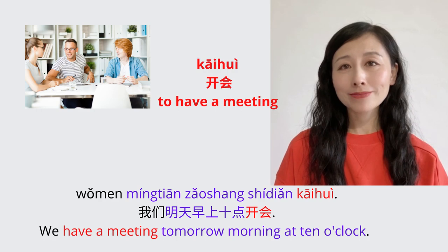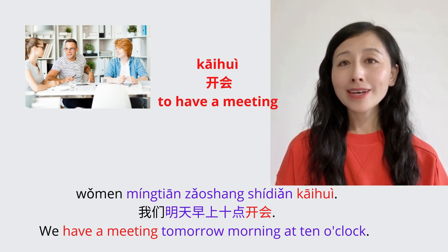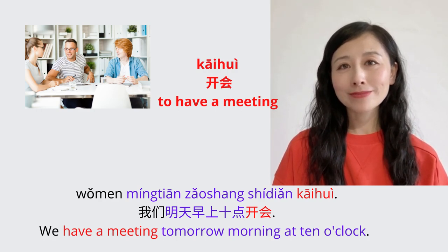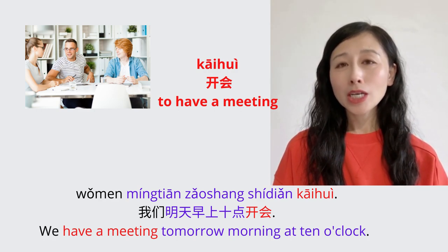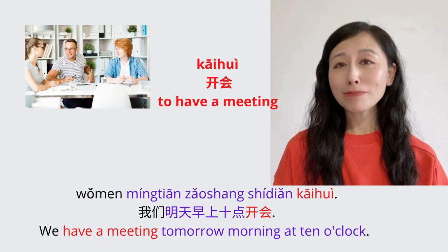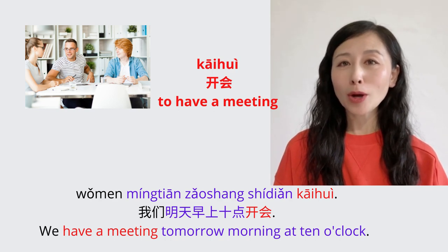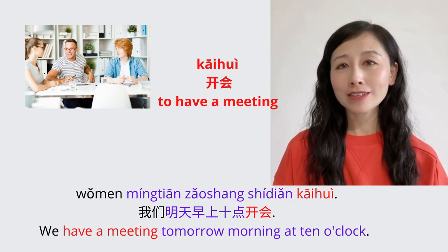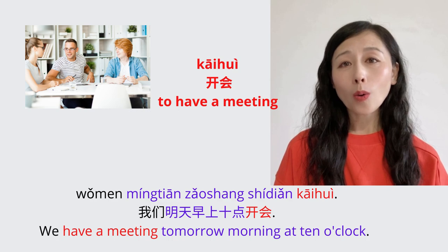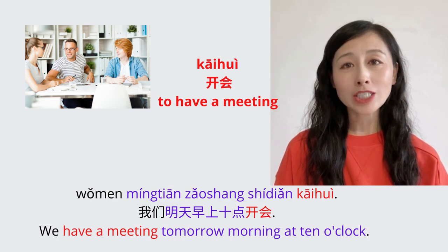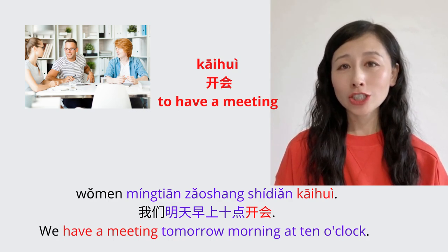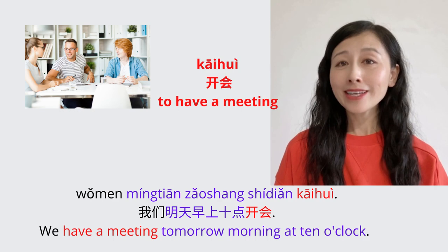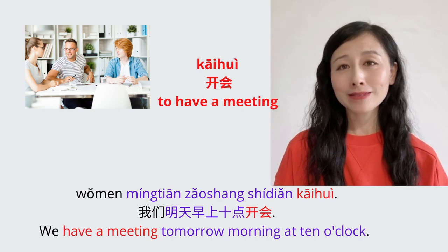To have a meeting: 开会. Example sentence: We have a meeting tomorrow morning at 10 o'clock. 我们明天早上十点开会。